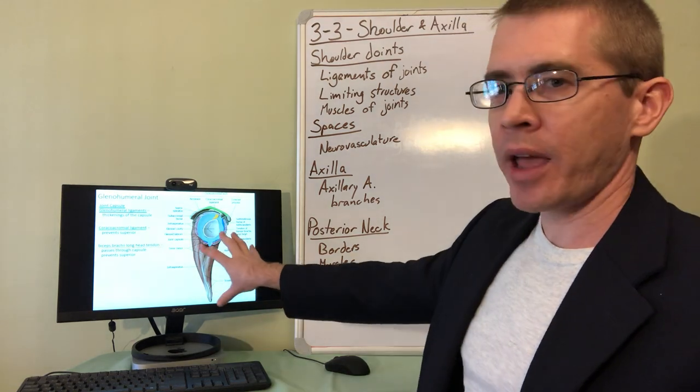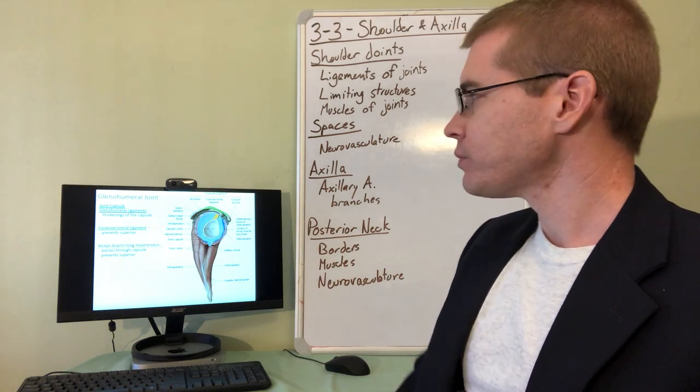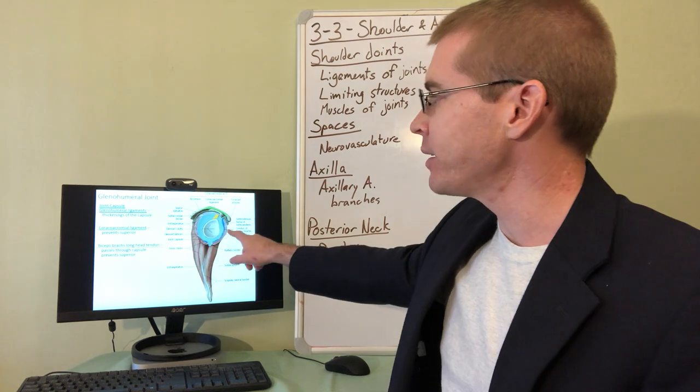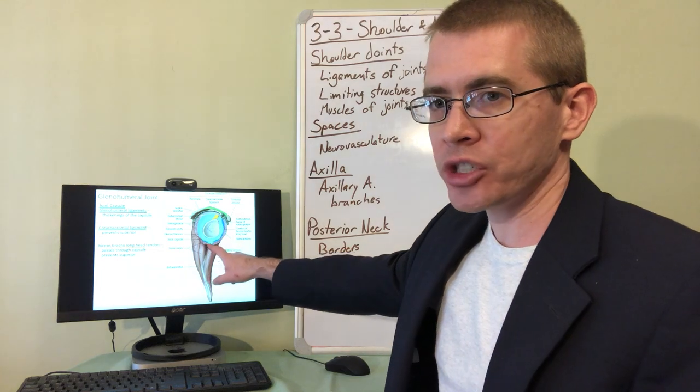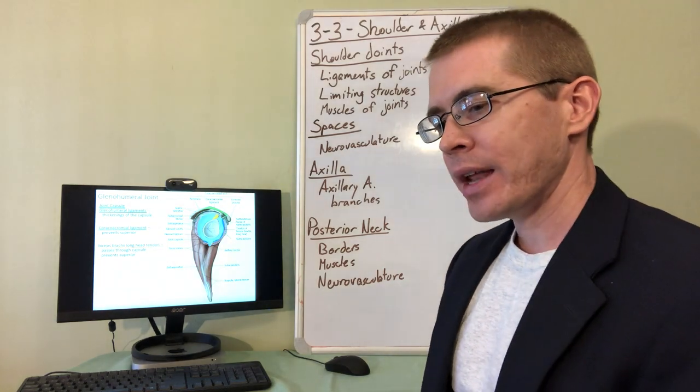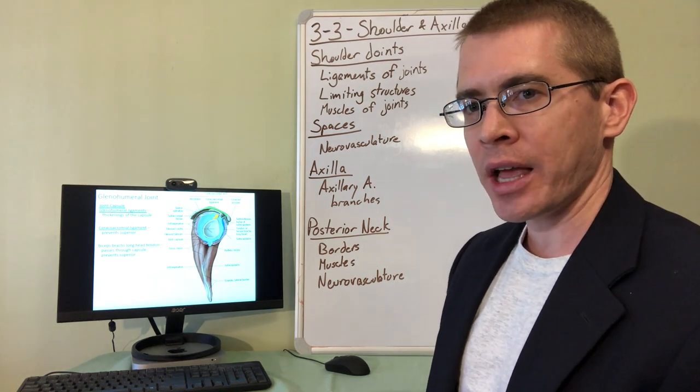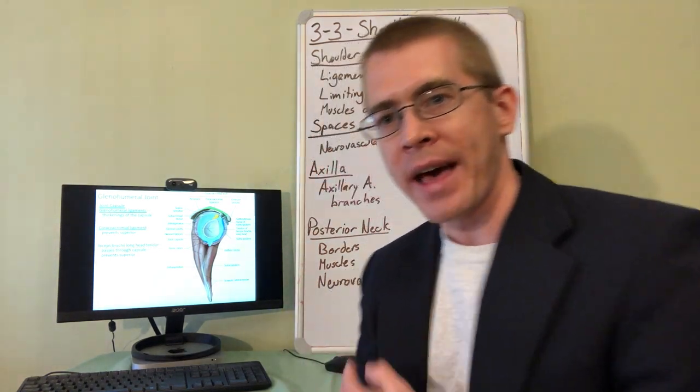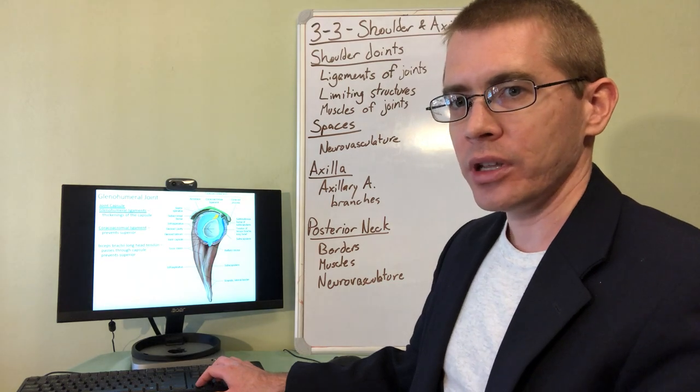So when we look at this joint capsule, we can begin to predict which direction on this joint is going to be the weakest. We can see all of those structures, there's musculature on the back and on the front, there's musculature on top. Where there is not any additional restricting structures is on the bottom in a region called the axillary recess. So that axillary recess is actually a region where there's no muscle or ligament, just the joint capsule. So that's why when individuals land flat on their shoulder, it tends to push the shoulder down in the joint socket and dislocate that joint inferiorly.